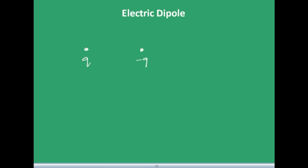Hi everyone. In this video I will be dealing with electric dipoles. Since this is a very small topic, I will try to complete it fast. An electric dipole is nothing but a pair of equal and opposite point charges separated by some small distance. Say one charge is +2 and the other is -2. There is a center of dipole, and the line joining the two charges defines the direction of the dipole in space. The convention says that the direction of dipole is from the negative charge to the positive charge.